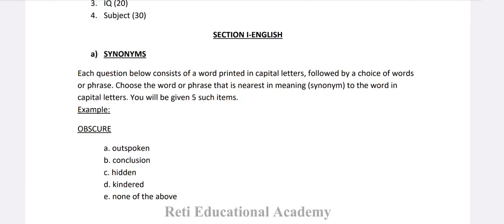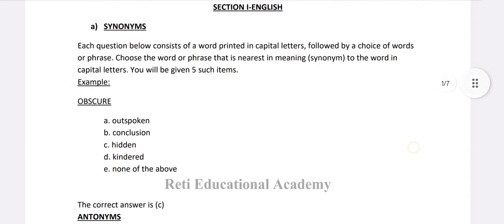Section 1, English A: Synonyms. Each question consists of a word printed in capital letters followed by a choice of words or phrases. Choose the word or phrase nearest in meaning to the word in capital letters. You will be given 5 such items. Example: OBSCURE — A. Outspoken, B. Conclusion, C. Hidden, D. Kindred, E. None of the above. The right option is C, Hidden.